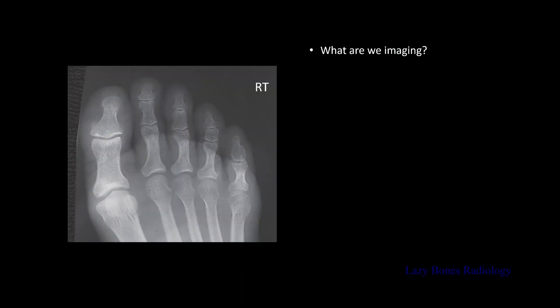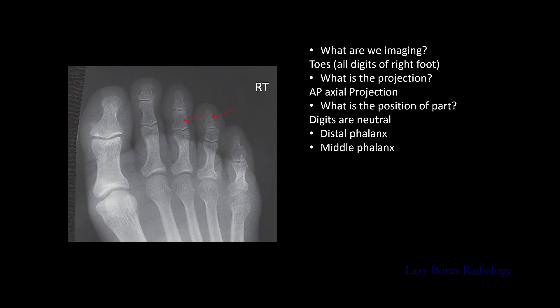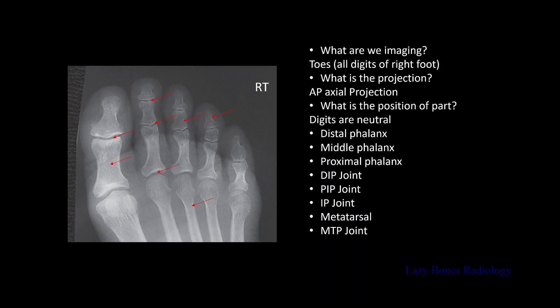Now let's practice. What are we imaging? This is an image of all the toes of the right foot. What is the projection? This is an AP axial projection. What is the position of the part? The digits are neutral. Now let's practice our anatomy: the distal phalanx, middle phalanx, proximal phalanx, the DIP or the distal interphalangeal joint, the PIP or the proximal interphalangeal joint, the IP joint or the interphalangeal joint, next is your metatarsal — or to be more specific, the third metatarsal — the MTP joint or the metatarsal phalangeal joint, and lastly the sesamoid bones.